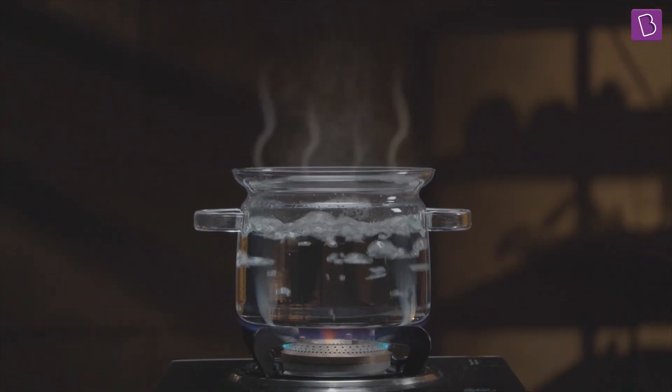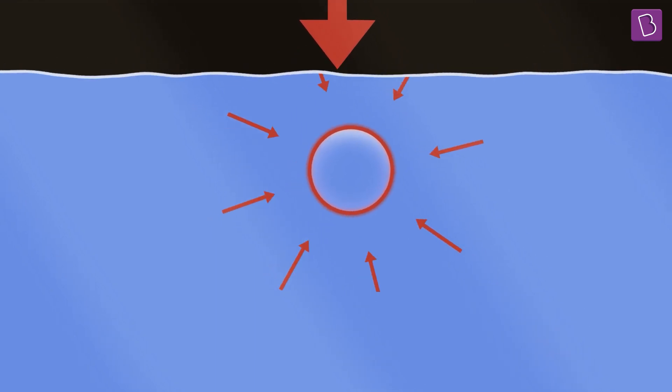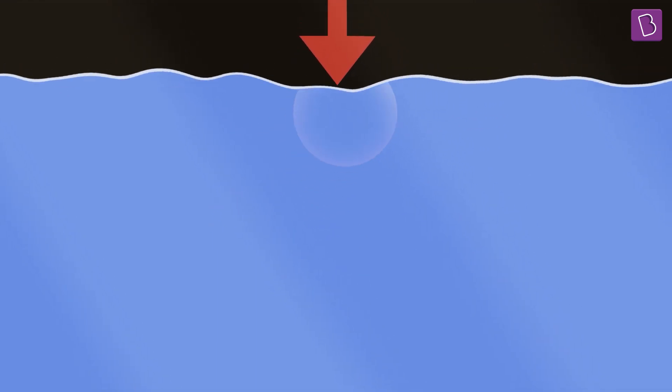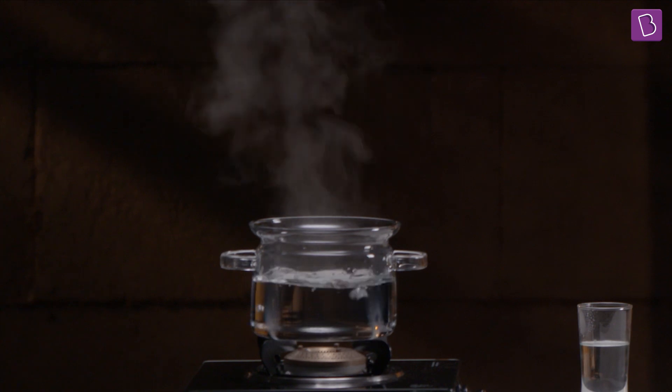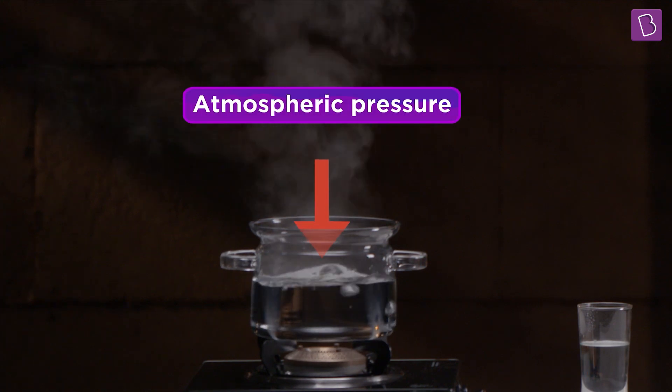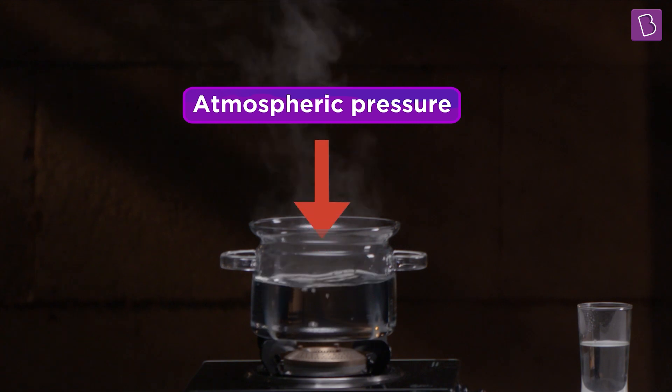Now note this. This bubble formation is affected by the atmosphere or the air around the boiling system. The pressure of the air around us weighs down on the system and without heating, this prevents bubbles from being formed. And water stays liquid water.